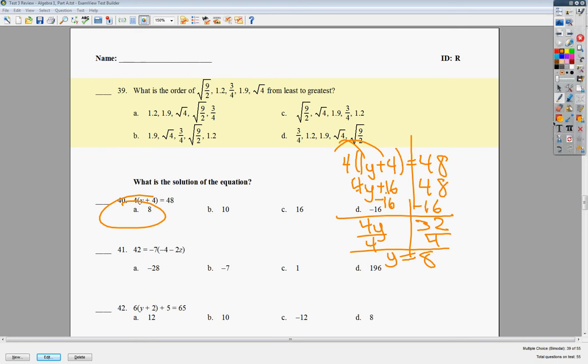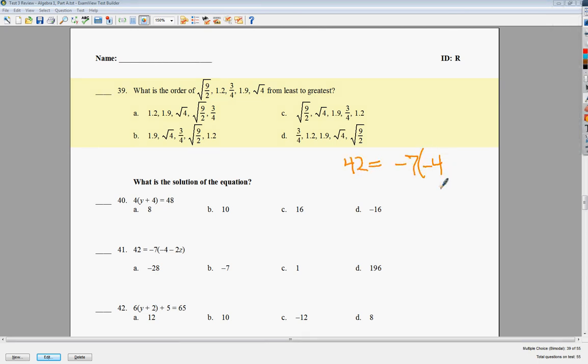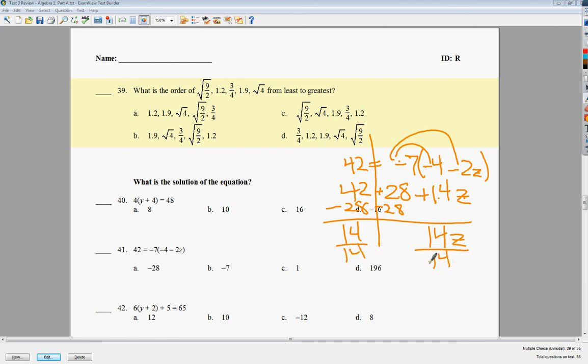Number 41, same type of thing. Or it's very similar anyway. You end up with 42 is equal to negative 7 times negative 4 times negative 2z. Draw your line. Negative 7 times negative 4 is positive 28. Negative 7 times negative 2 is positive 14z. This is plus 28, so I need to subtract. 42 minus 28 is equal to 14. Bring down 14z. You've got times here, so I need to divide. z is equal to 1. So the answer to number 41 is C.